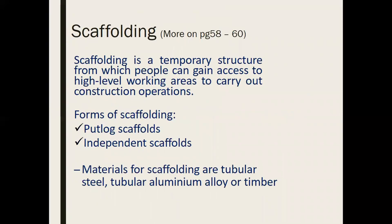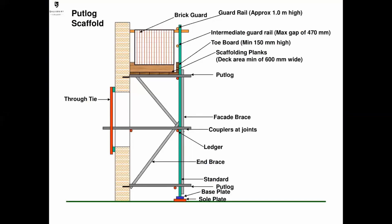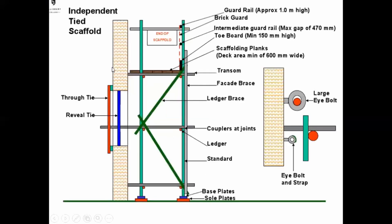Scaffolding is a temporary structure that allows people to gain access to high-level working areas to carry out construction operations. There is more information on pages 58 to 60. Forms of scaffolding include putlog and independent scaffold, made from tubular steel, aluminium, or timber. A putlog scaffold ties to the building, while an independent scaffold stands on its own but still ties for safety.